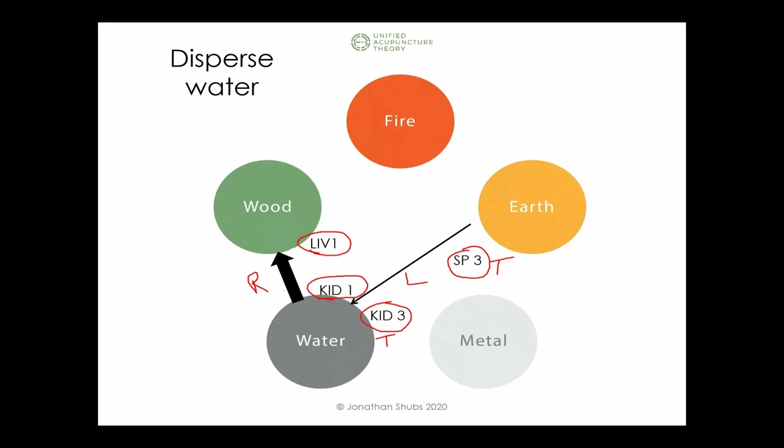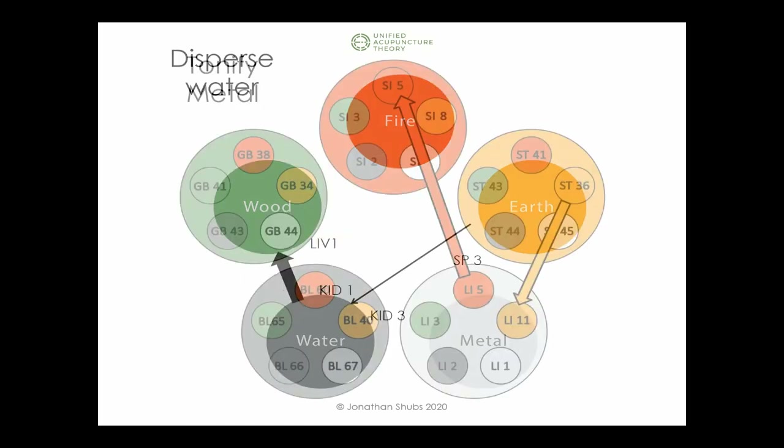That is one possibility for coming out of the current scenario — we're going to have a lot of fear and need to help people come out of it. You can do this with massage. Kidney 1 and Liver 1 are also great points for calming the shen when people are in fearful settings.